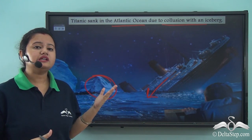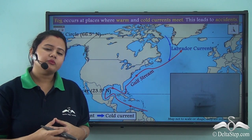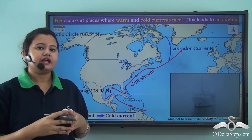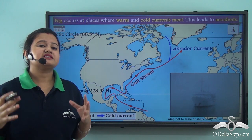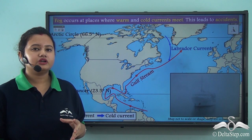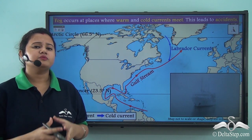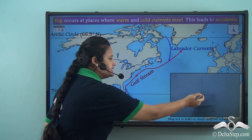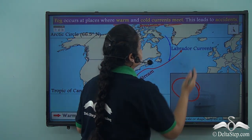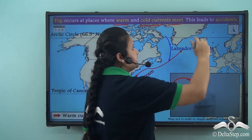We must understand what leads to the formation of such dense fog. Warm currents usually raise the temperature of the places where they are prevalent, and the air over a warm current carries a lot of moisture. When a warm current connects with a cold current, the moisture in the air of the warm current condenses and forms dense fog. Thus, dense fog occurs at places where cold and warm ocean currents meet, reducing visibility and leading to fatal accidents.